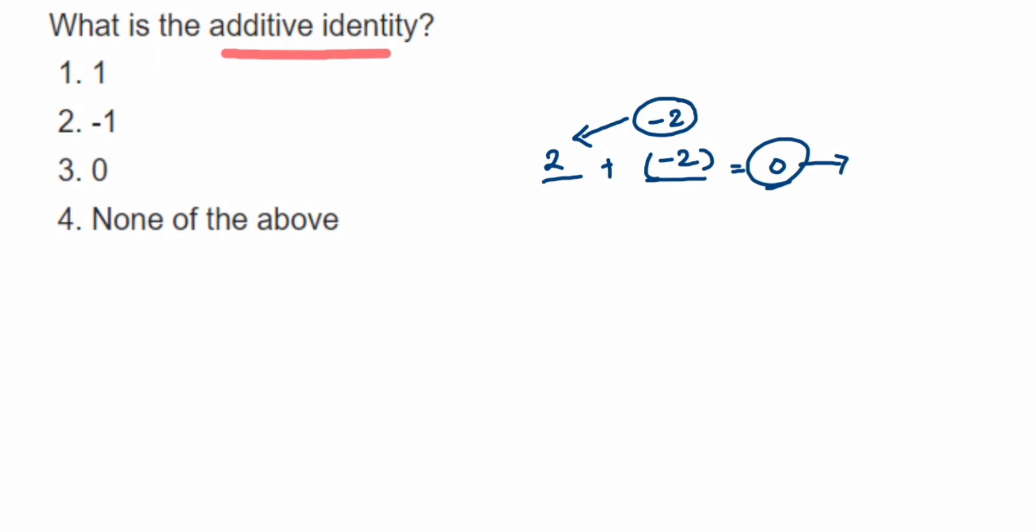I hope it's clear. Let me take one more example. Suppose you have a number of 5 and they're asking what is additive identity. Additive identity means when you're adding two numbers, the answer should be zero.